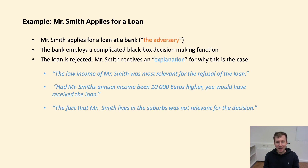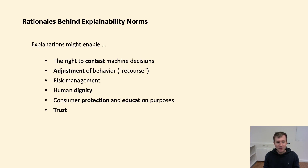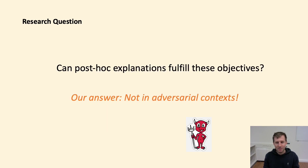As illustrated on this slide, there are different forms that such an algorithmic explanation might take. What are the motivations behind the idea that the bank should provide an explanation? One idea is that the explanation might help individuals to contest machine decisions. Others have suggested they might allow individuals to alter their behavior and obtain different outcomes in the future. It has also been argued that explanations might enhance trust into automated decision-making or serve consumer protection and education purposes. The main message of our paper is that in adversarial contexts, post-hoc explanation methods fail to fulfill all of these objectives.